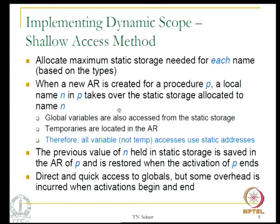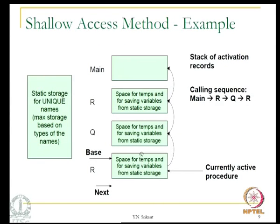There is yet another method for implementing dynamic scoping called the shallow access method. In this approach, there is a stack of activation records as usual with no static link required — just the dynamic link. The activation record does not provide storage for any programmer-defined variables at all; it provides space only for temporaries and for saving variables from what is known as static storage. The programmer-declared variables in procedures are actually stored in a unique static area — there is exactly one fixed storage location for each unique name.